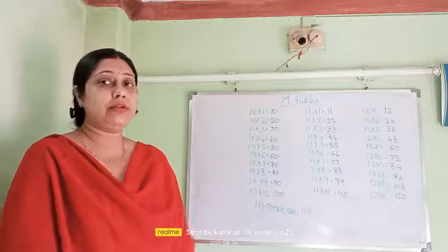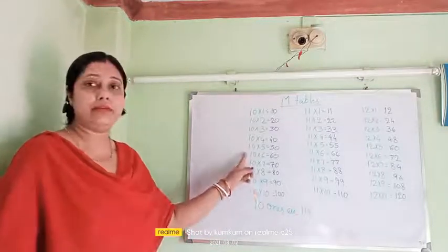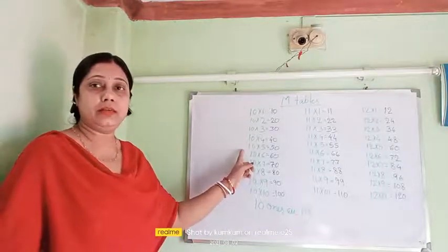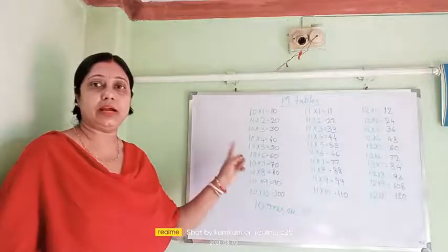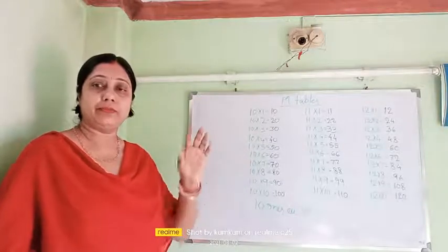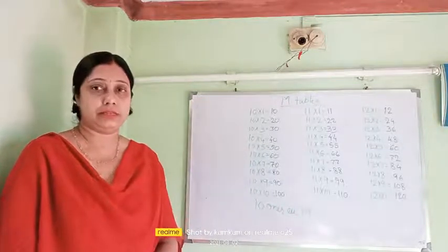So whenever you are reading, first you read up to 5 and then go on reading up to 5. Then after 5, again from 6 to 10 you read.